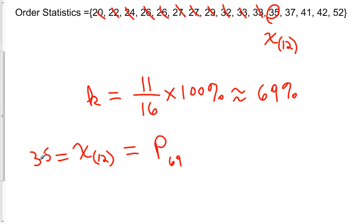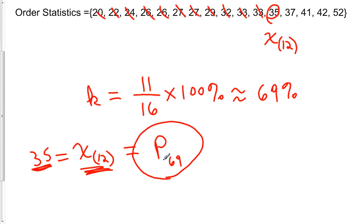So 35 is the 12th order statistic in the ordered list, and it is also the 69th percentile — meaning the number 35 is larger than 69% of the other values in this dataset. That is how you calculate the percentile value for a particular data point.